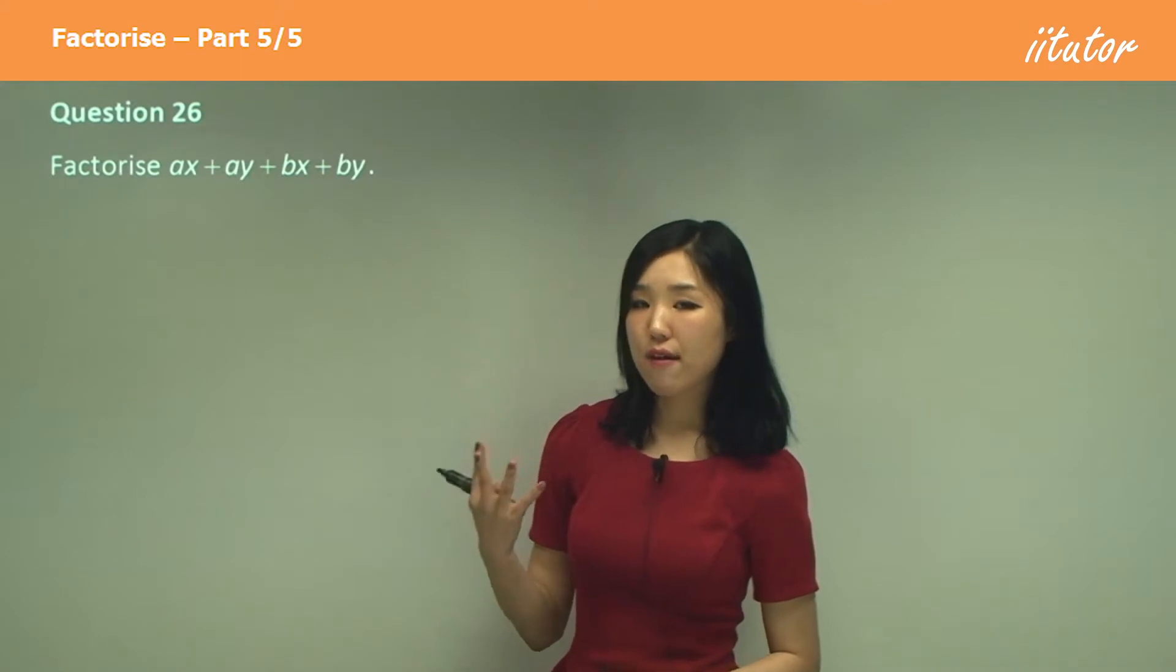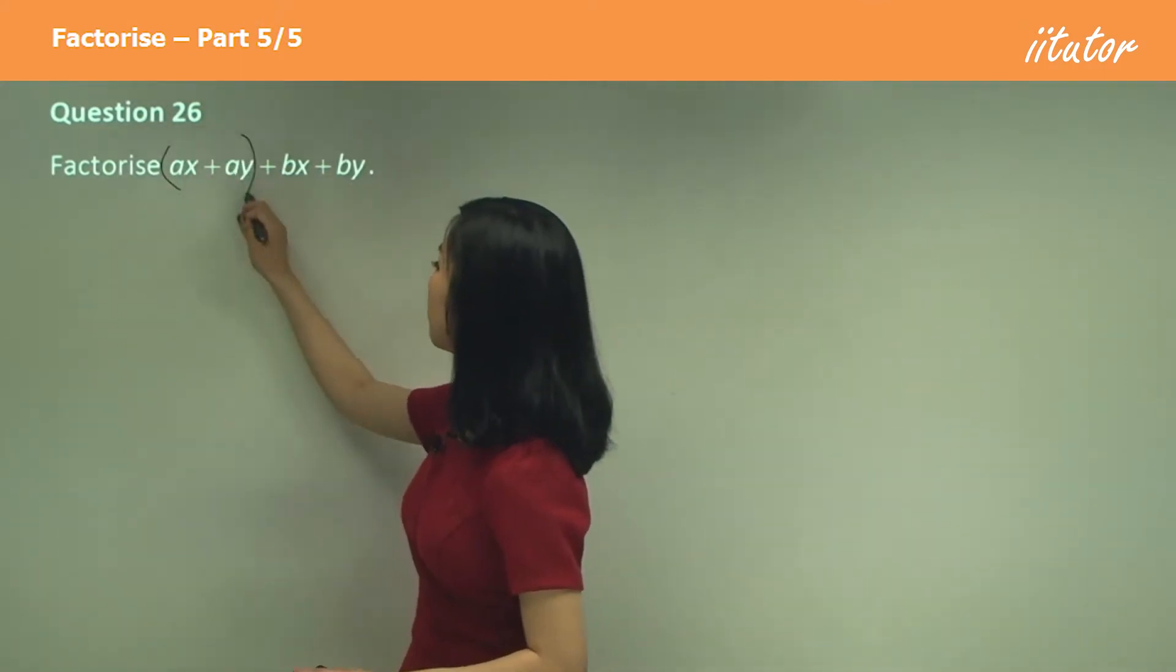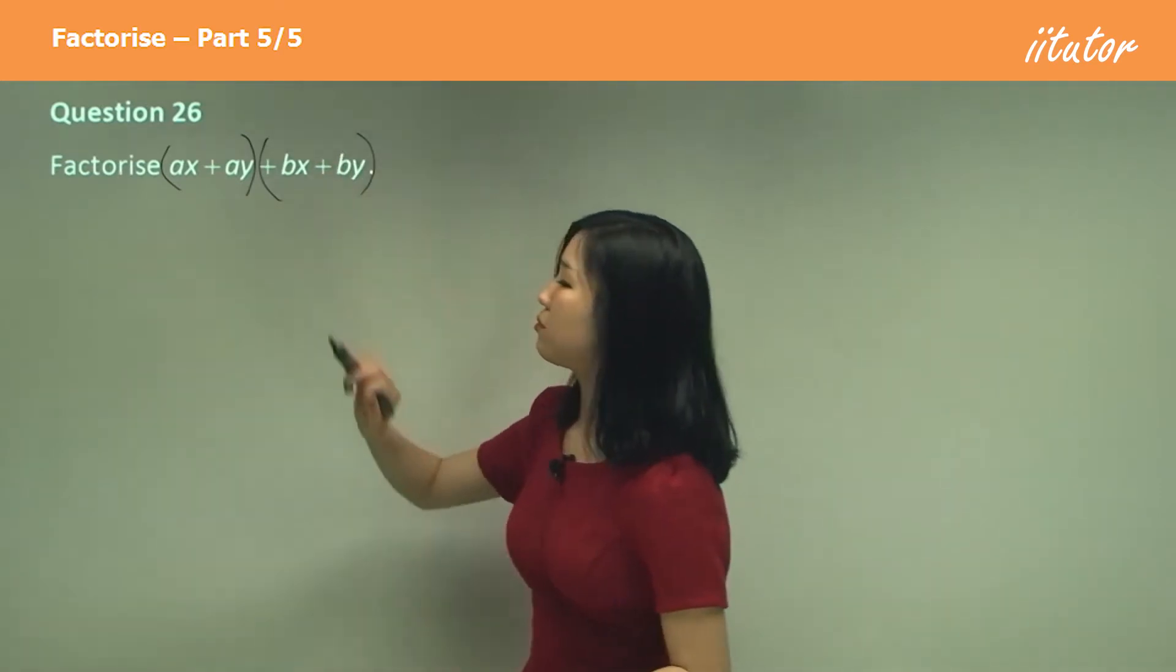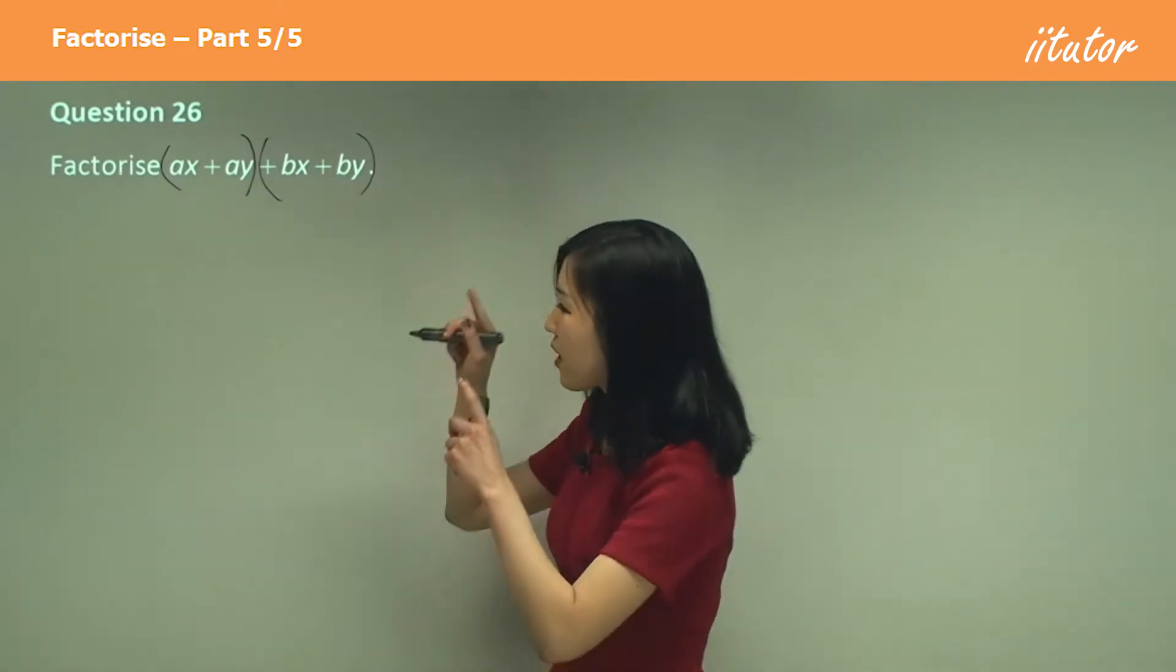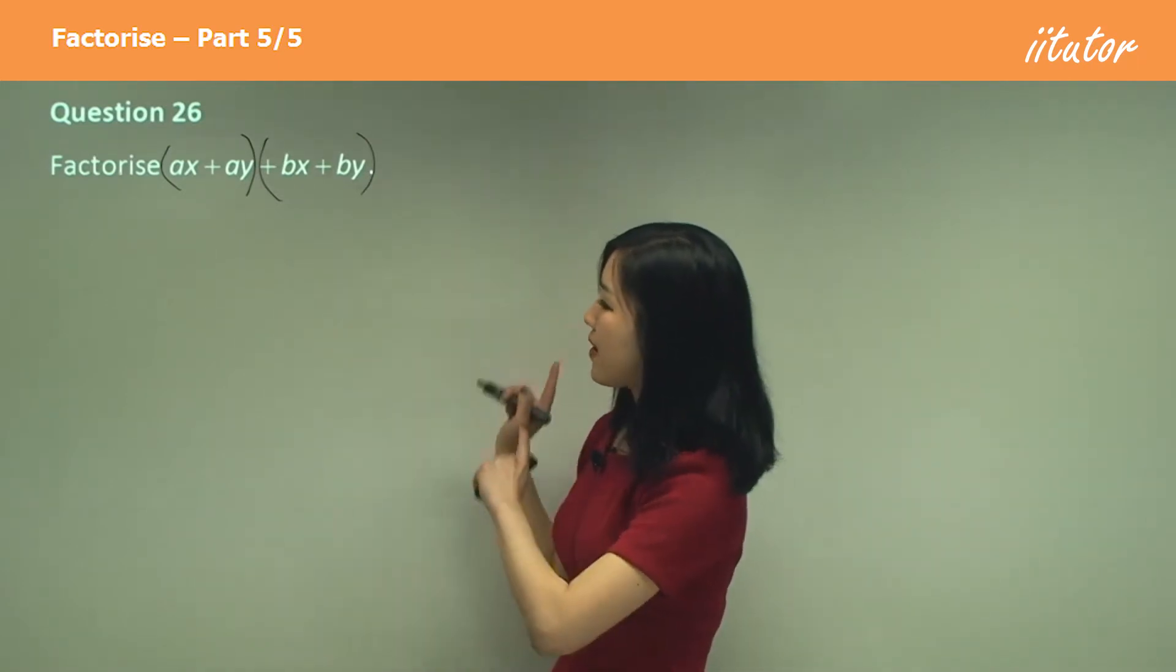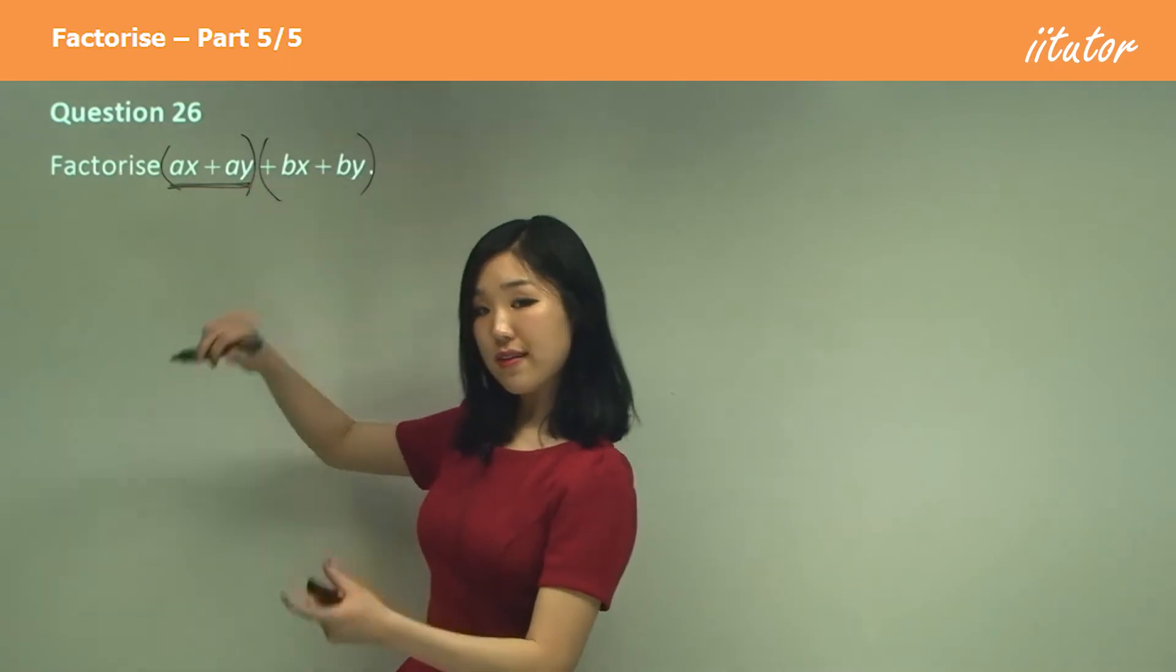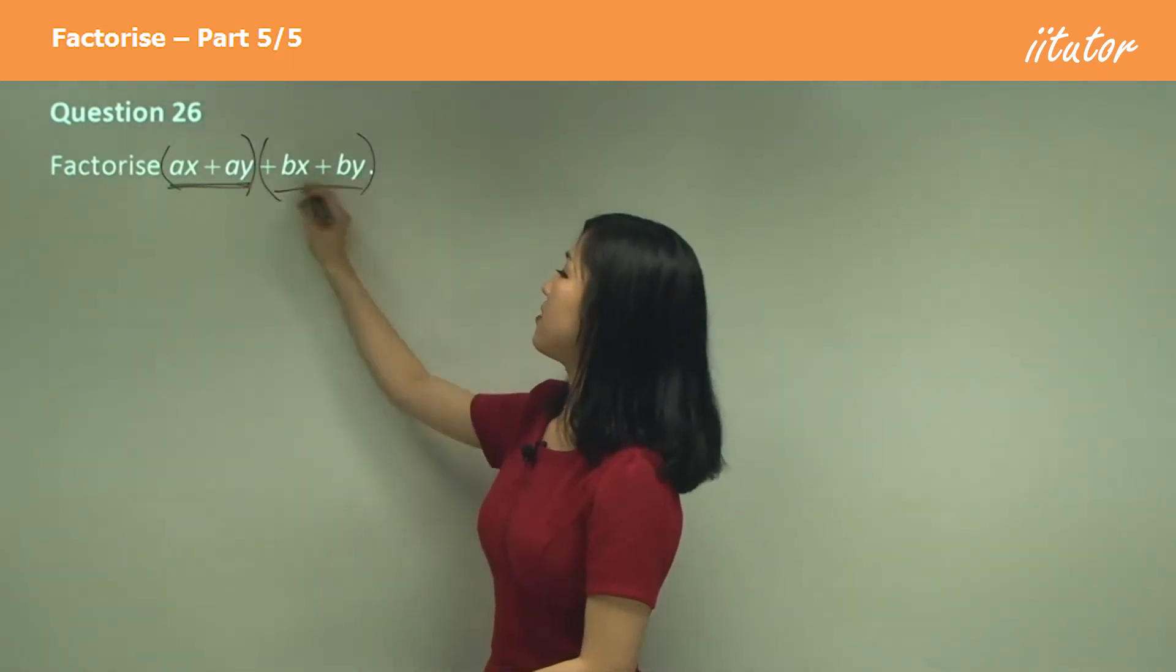When you have four terms, I'm going to try to group them into twos. Just think those brackets are invisible. I'm just going to put brackets in there, so I'm going to factorize this individually and this individually.